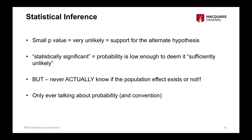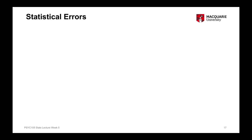It's important to keep in mind those caveats: we never actually know if there is an effect in the population. We only know whether there's enough evidence to conclude that we likely have an effect in the population. Because we never actually know, there are a couple of different errors we can make — called a type 1 and a type 2 error — two different ways we can go wrong in statistical testing.